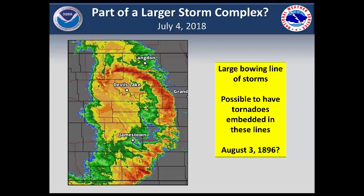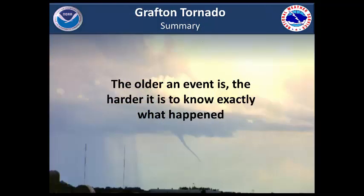On July 4th of this year, there was a large bowing line of thunderstorms that tracked from west to east across this area. Widespread strong winds were reported, and within portions of this line, a few tornadoes formed. Could this be similar to what happened on August 3, 1896? It is possible. However, exactly what happened on that day back in 1896 will probably never be known.